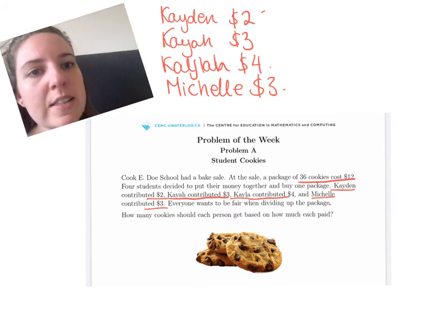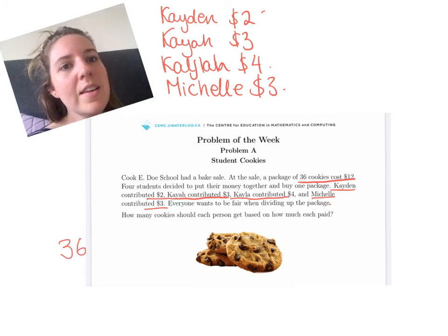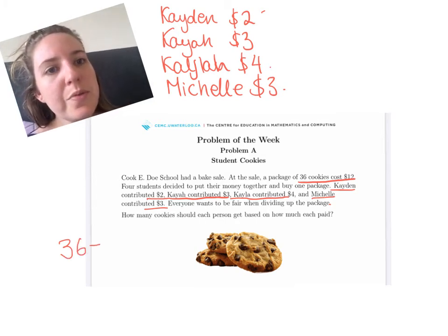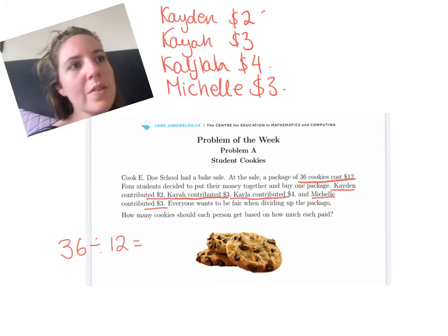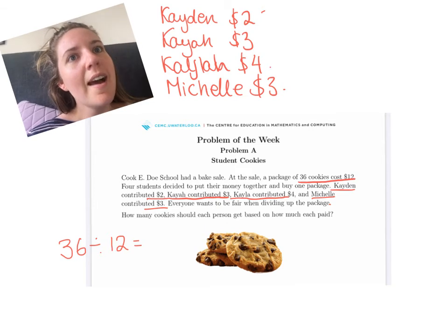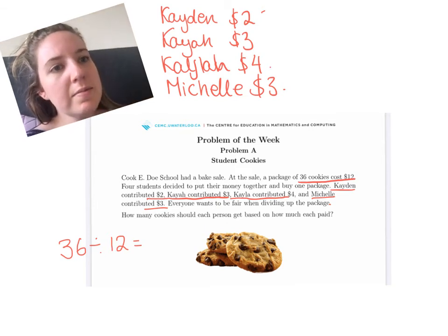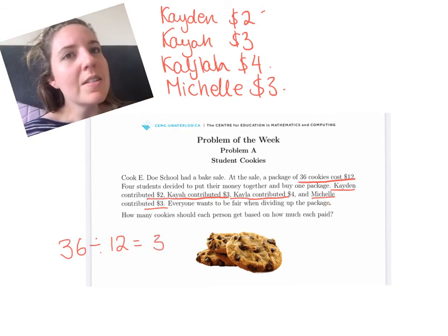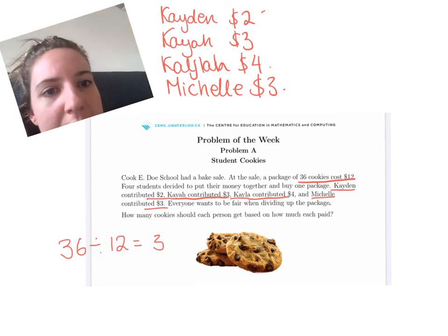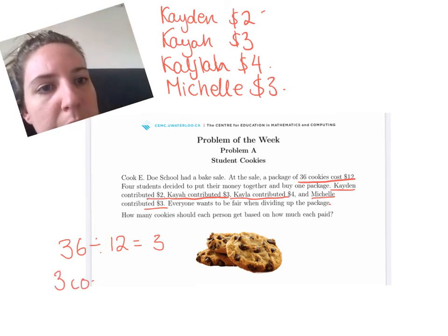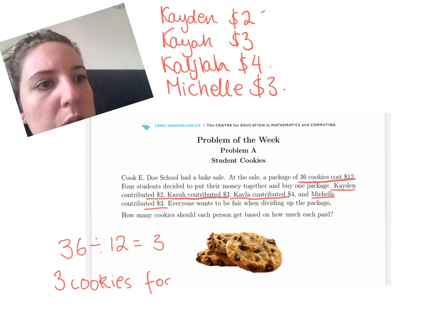You could think about 36 cookies and divide that by 12, and that gives you 3. Three cookies for a single dollar.